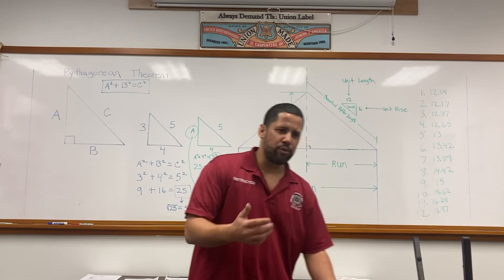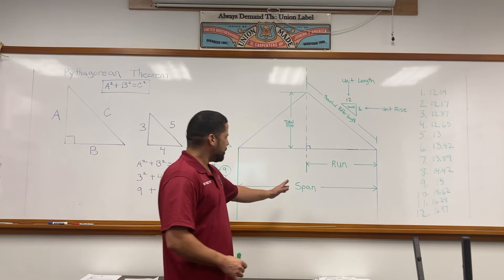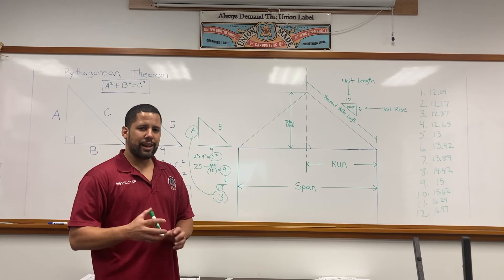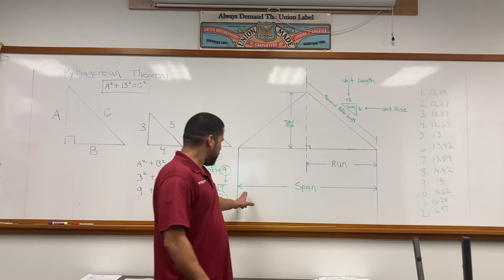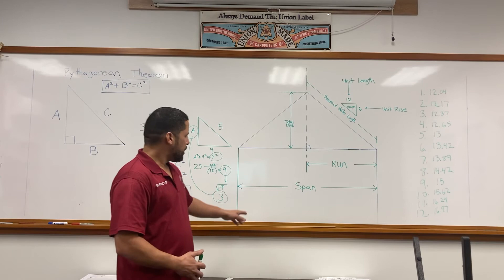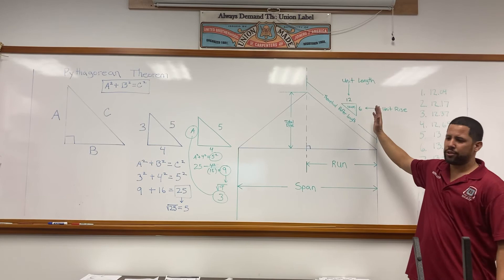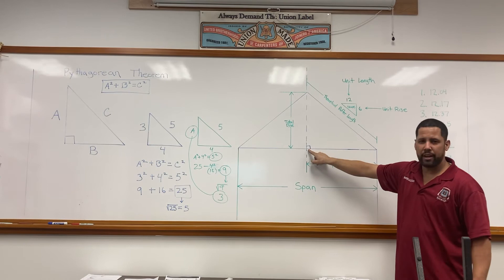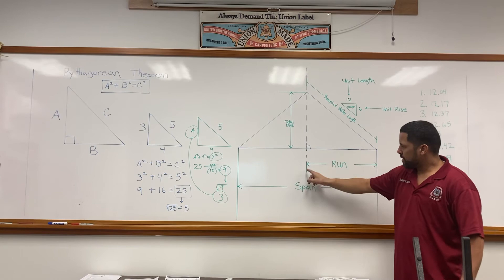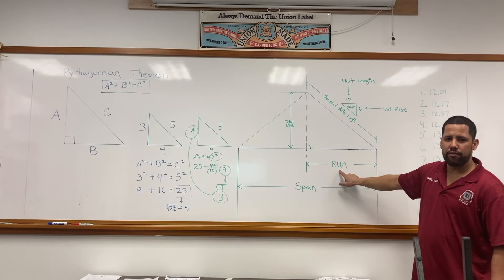Now I'm going to show you how to calculate the length of a rafter on a roof. First, what numbers do you need? To calculate the length of a roof, you need the span—the width of the building. You take the span and cut it in half. When calculating for a roof, you need to build half of the roof.